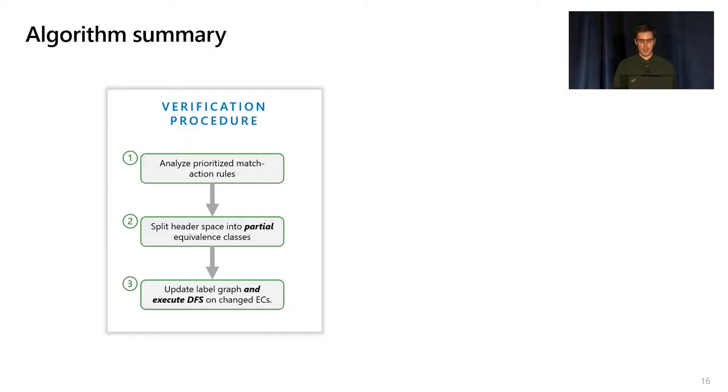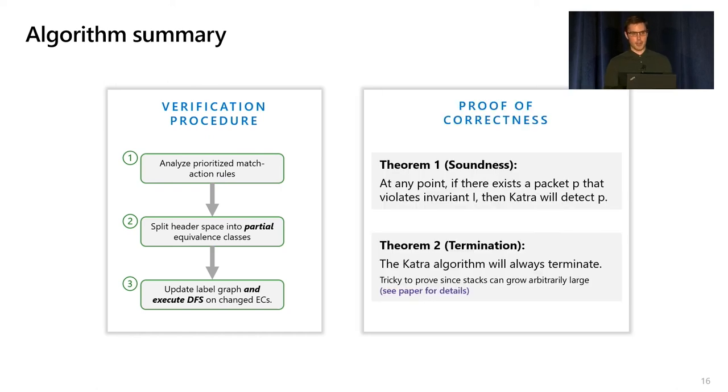To summarize, the high-level algorithm is now almost the same as before with other tools. We analyze the match action rules, identify any changed partial equivalence classes, and then run a modified DFS that analyzes the headers and the header stacks to find property violations. In the paper, we prove that our algorithm is correct and that it terminates. The latter is actually quite tricky because we don't bound the size of these stacks, so we have to appeal to ideas from pushdown automata.